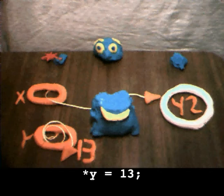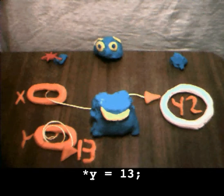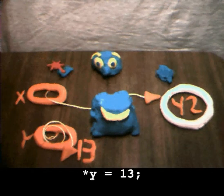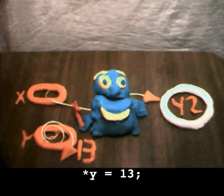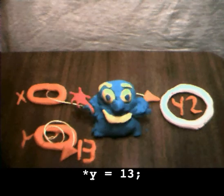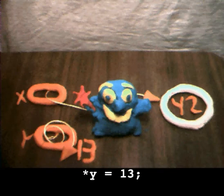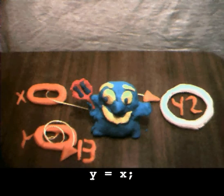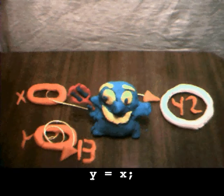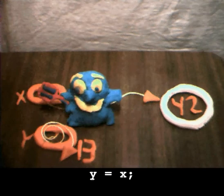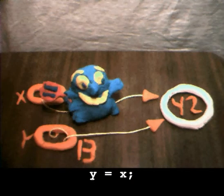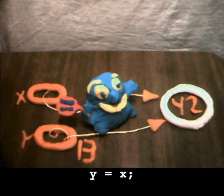Good point. Yeah, we allocated the pointer y, but we never set it to point to a pointee. Very observant. Hey, you're looking good there, Binky. Can you fix it so that y points to the same pointee as x? Sure. I'll use my magic wand of pointer assignment. Is that gonna be a problem, like before? No, this doesn't touch the pointees. It just changes one pointer to point to the same thing as another. Now y points to the same place as x.